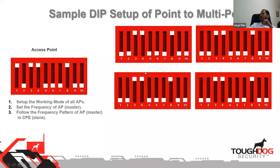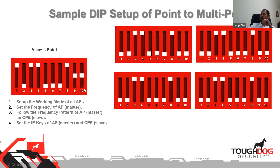You can see that these radios communicate under the same frequency so they can talk to each other — the access point is set as access point, the clients have switch one off, and they're all on the same frequency. Switches two through eight handle addressing. Switches nine and ten are also used: in all point-to-point scenarios, the access point has pins nine and ten turned on. The remaining switches use binary numbering from one to four.